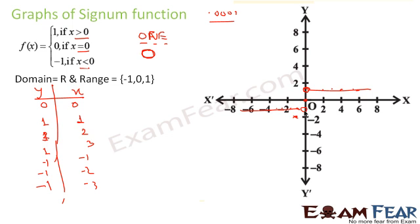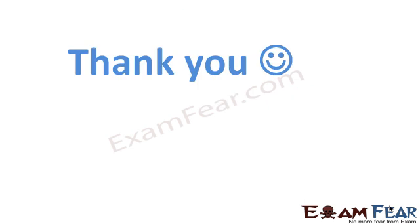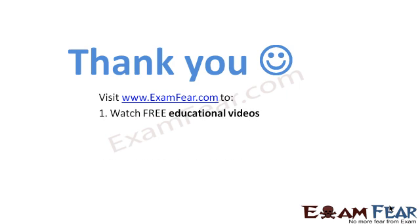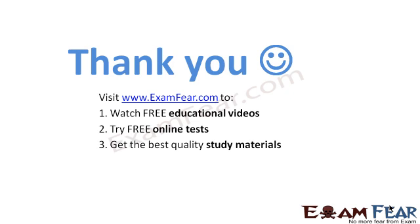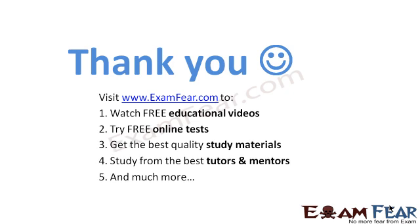For the signum function, the domain is ℝ (you can give any value) but the range is {−1, 0, 1}. From the graph we can see what the domain and range are. Thank you — visit examfear.com to watch free educational videos, try free online tests, get the best quality study material, study from the best student mentors, and much more. Thanks once again.